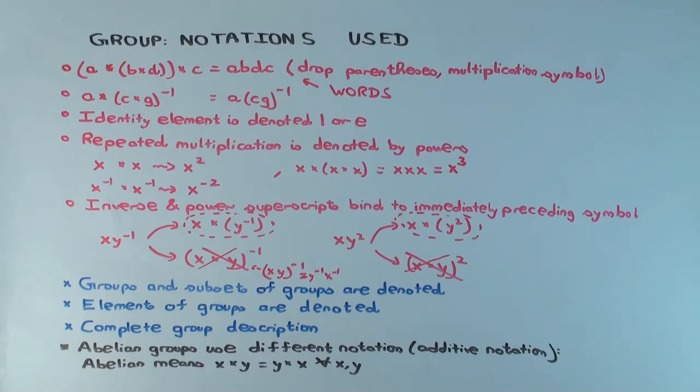Now let's get to some notation for the groups, elements of the group, subsets of the groups, etc. So groups and subsets of the groups are typically denoted by what kinds of letters? Capital letters. The typical letters are like G. G is the favorite. Most people say that G stands for group. H and K because they're next to G.